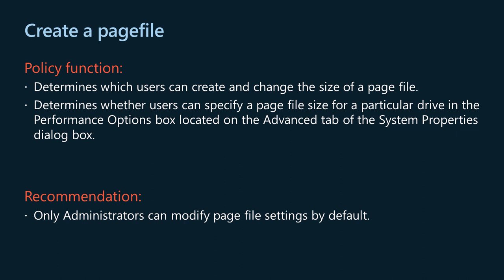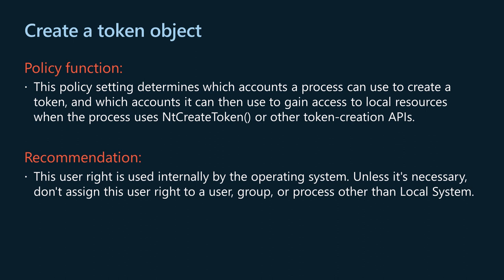The create a page file policy determines which users can create and change the size of a page file, specifying a page file size for a particular drive in the performance options box or through internal APIs. Windows designates a section of the hard drive as virtual memory — the page file (pagefile.sys) — to supplement the computer's RAM for improving performance. Although the file is hidden from browsing, you can manage it using system settings. By default, members of the administrators group have this right. When a user signs in, Windows builds the user's access token; when you revoke a privilege, the change is immediately recorded but not reflected in the access token until the next logon.